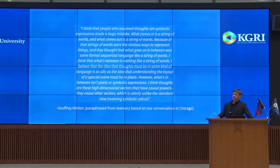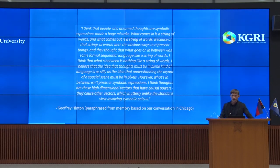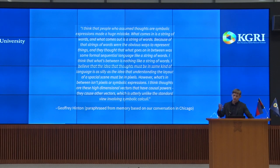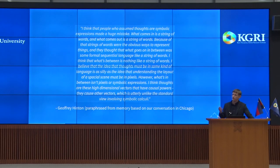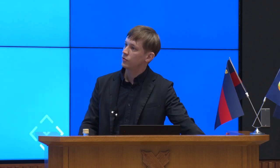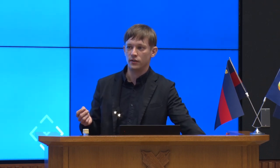He's basically implying that we shouldn't view artificial intelligence as a symbolic system like a formal language, but more as a manifold of neural activity. The neural communication that happens in neural networks defines the thought process of a neural network, which can be viewed as a point in some high-dimensional vector space. Studying the structure of those vector spaces is an important part of understanding how neural networks make decisions.